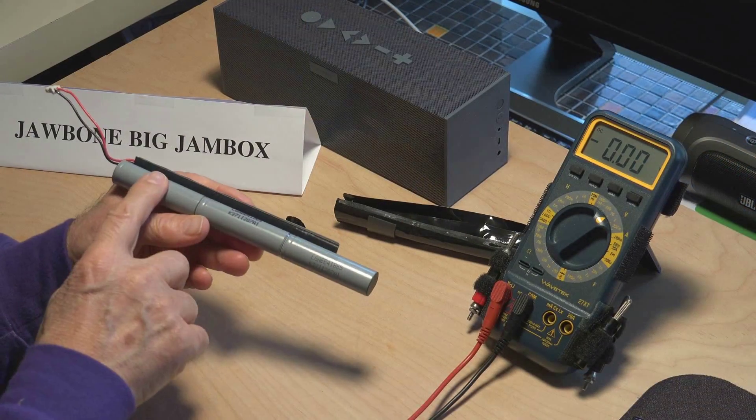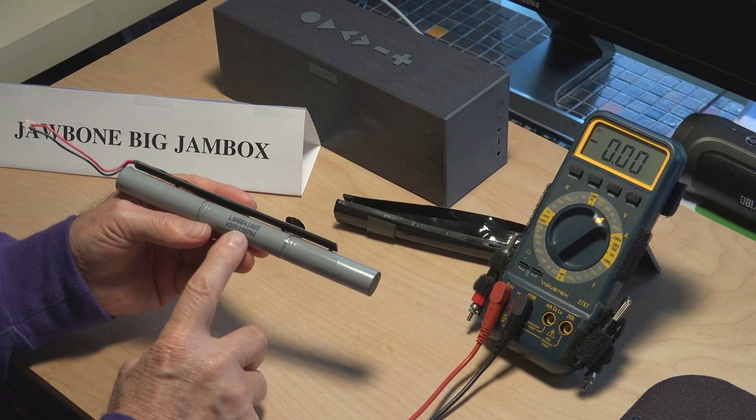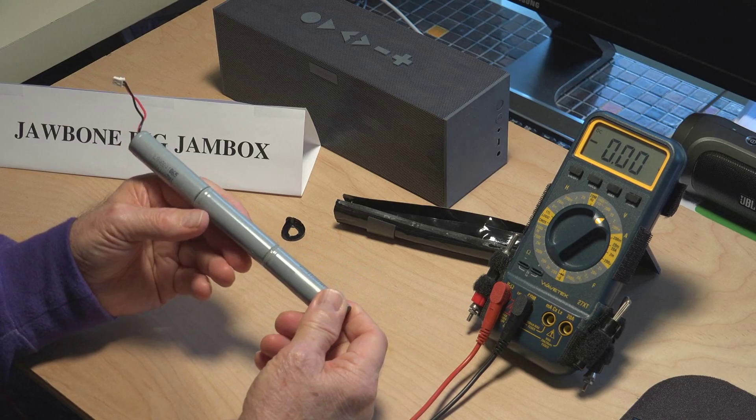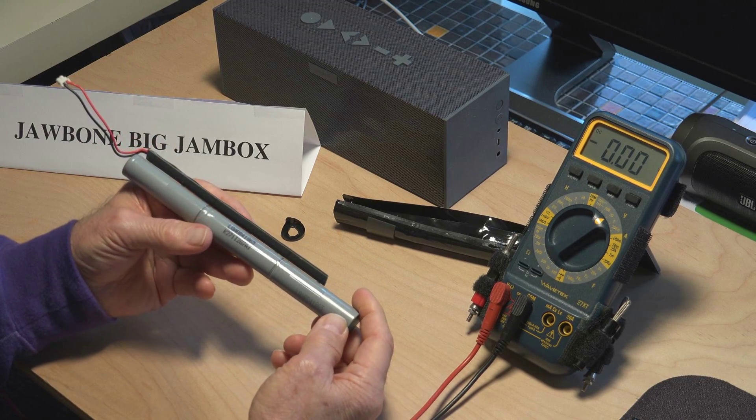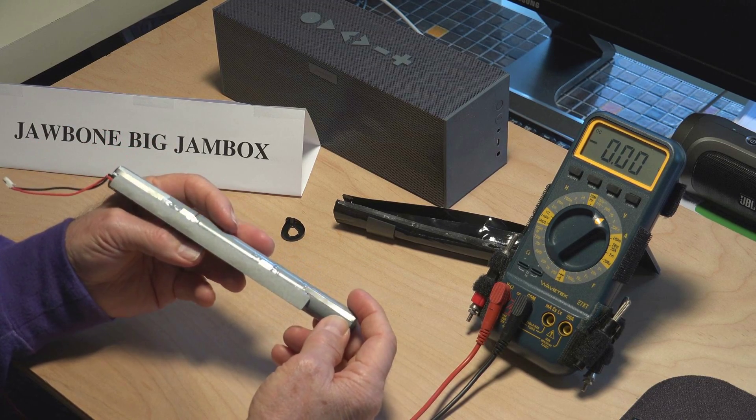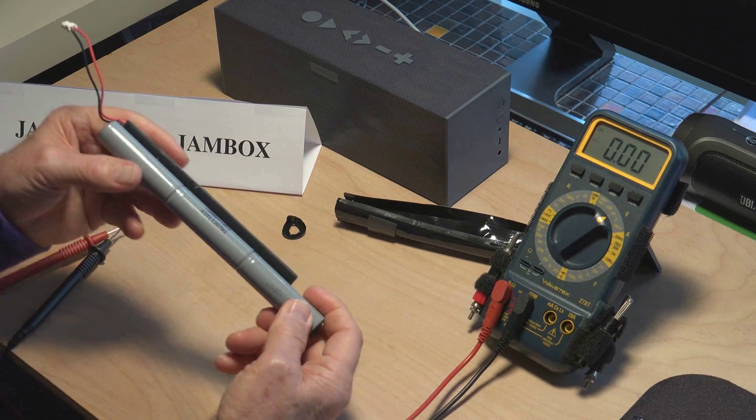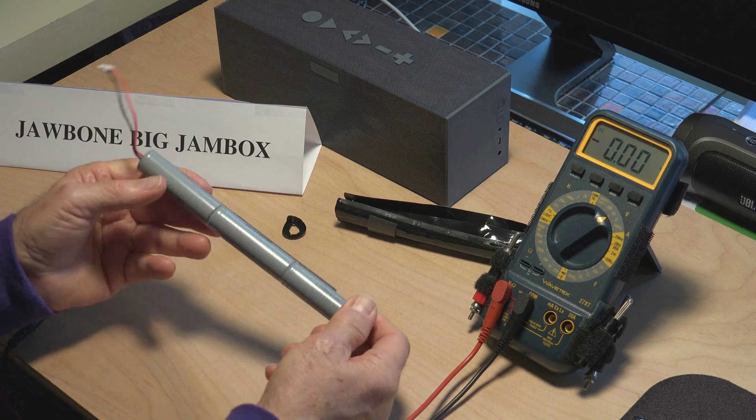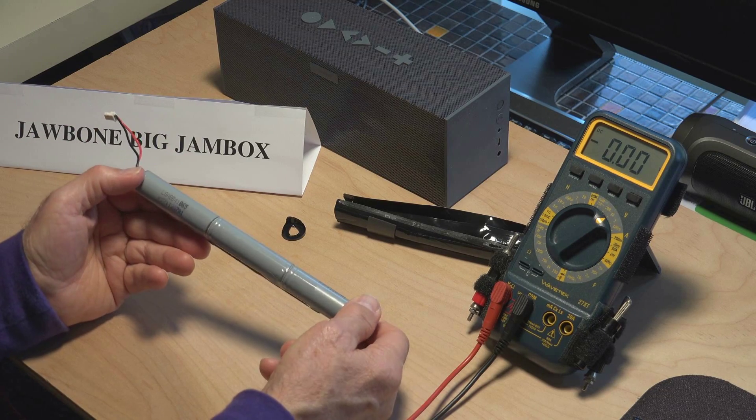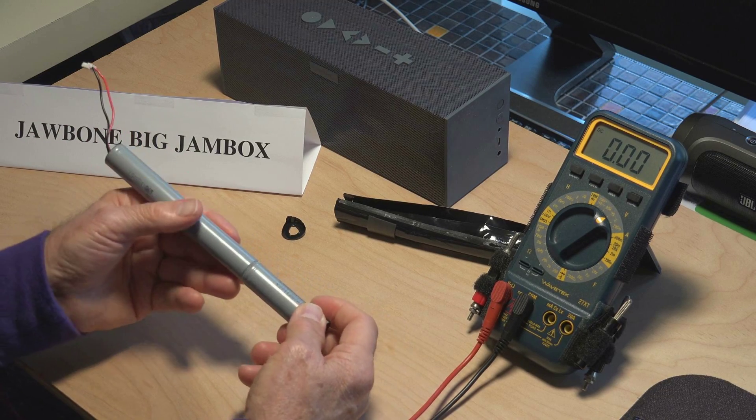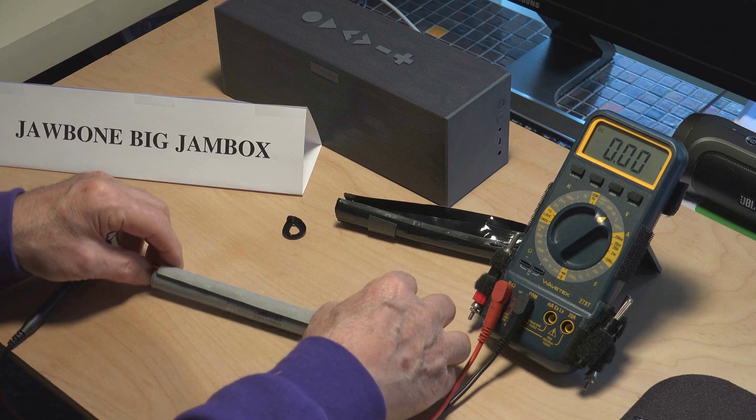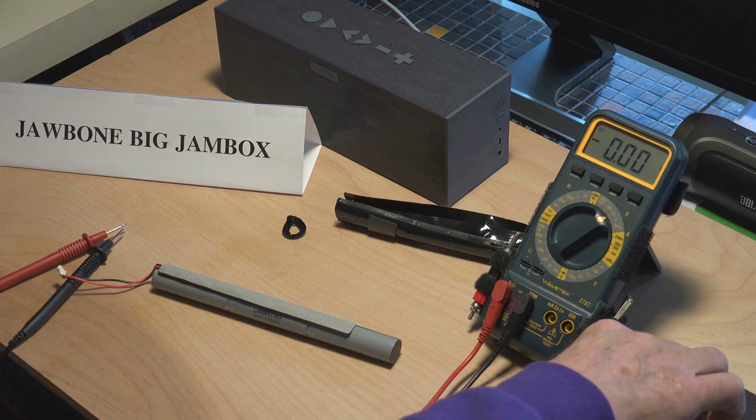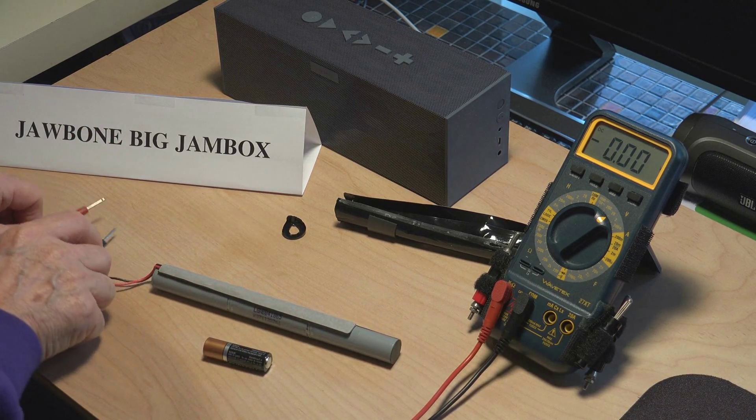Each one of these cells has a proprietary number on it. They don't want you to go in and try to buy cells and replace it. They want to have the only place you can get it would be in Jawbone Jambox. So they want to have it proprietary and a lock job on replacement parts.